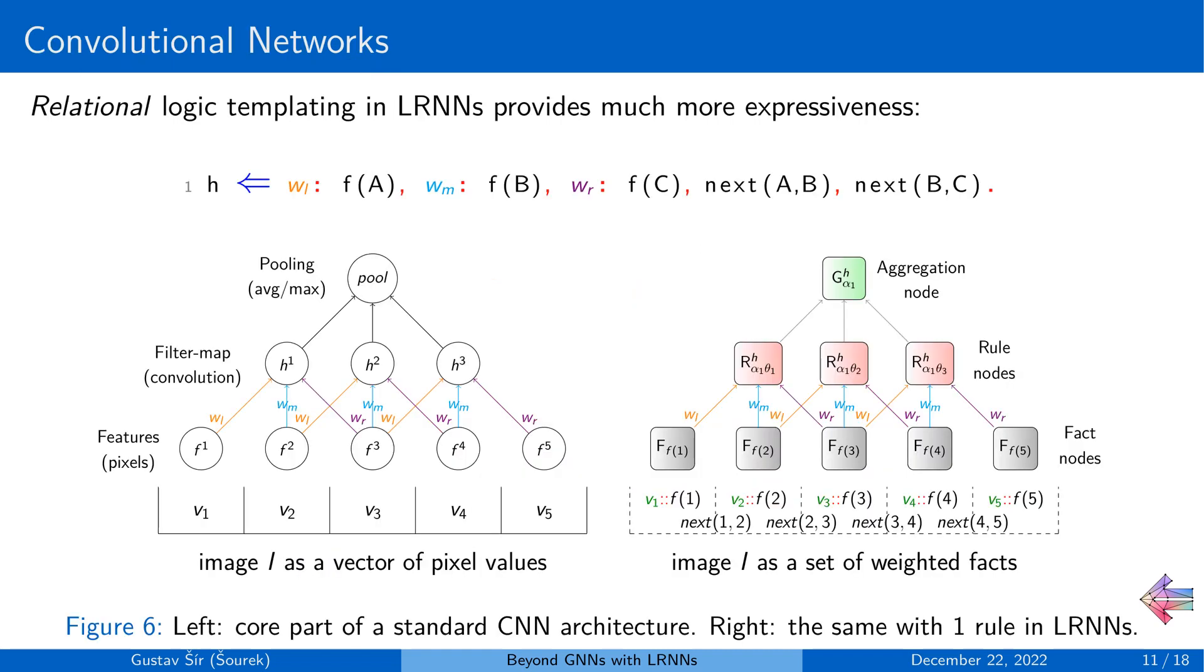Now, with the relational logic templates that may contain logical variables in them, things get much more interesting as we can get to more advanced neural architectures. So for instance, here is an encoding of a standard convolutional neural network, or CNN for short, simplified to one dimension for visual clarity, the core of which can be encoded by the simple rule on top, which expresses the relational pattern that each three objects, A, B, and C, that are consecutive in some sense, should be jointly parametrized and aggregated into a latent representation concept called H.